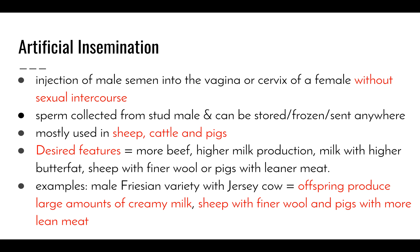The sperm is collected from the stud male — the male that shows dominant characteristics people wish to pass on — and it can be stored, frozen, or sent anywhere. In agriculture it's mostly used in animals such as sheep, cattle, and pigs. Desired features include animals that produce more beef, cows with higher milk production, milk with higher butterfat content, sheep with finer wool, and pigs with leaner meat for bacon and ham.